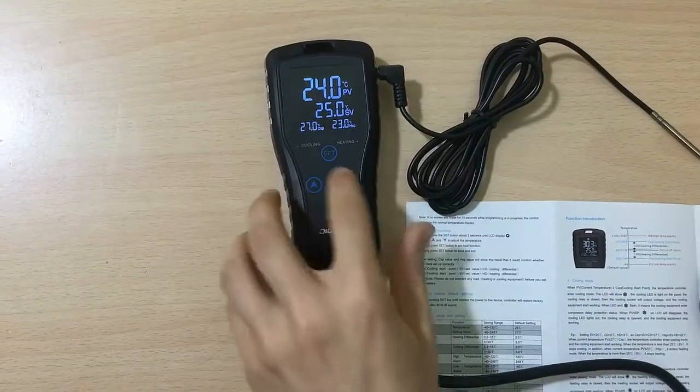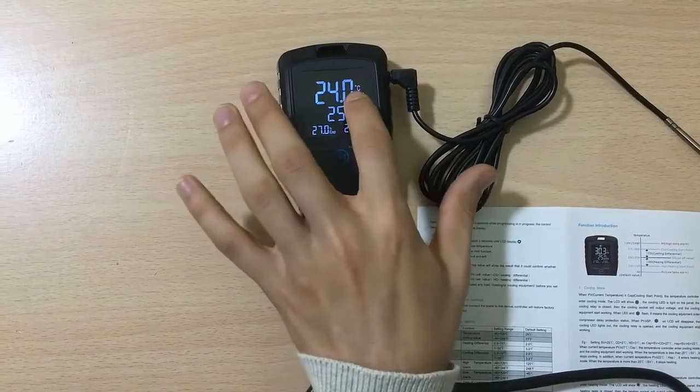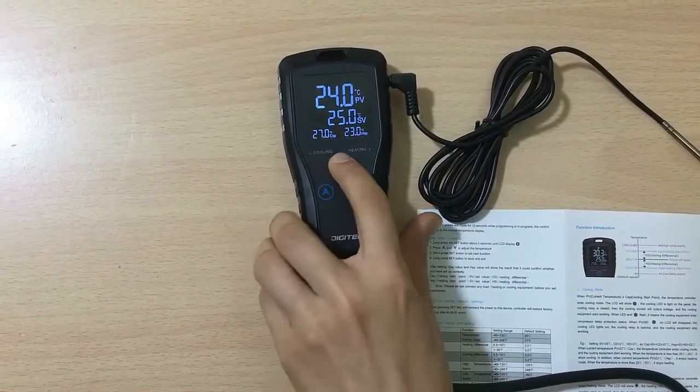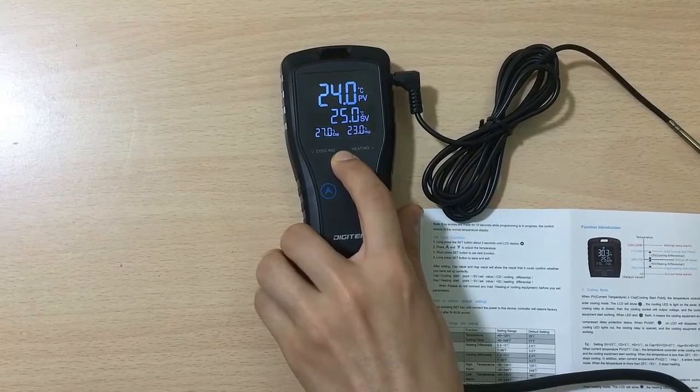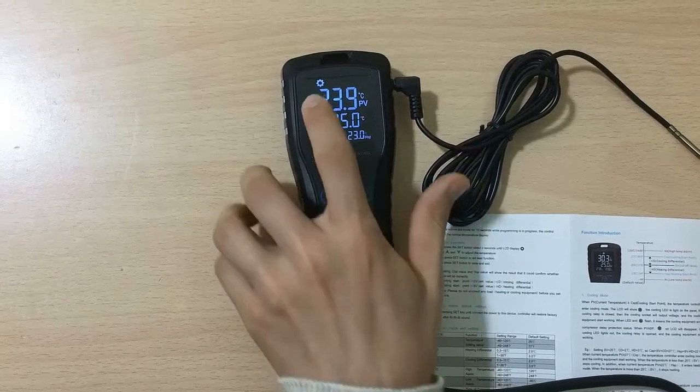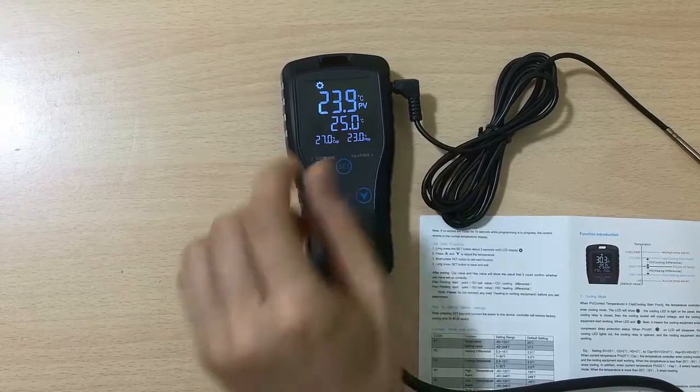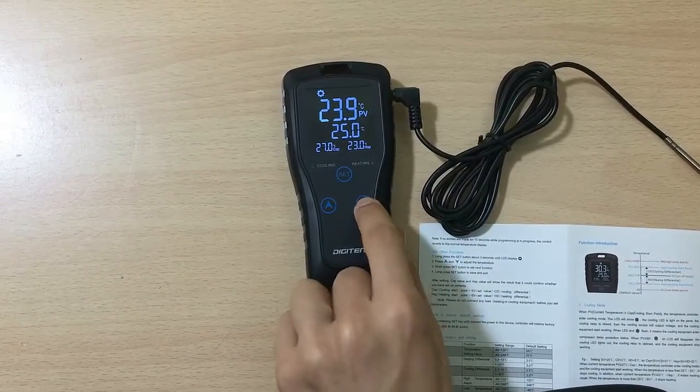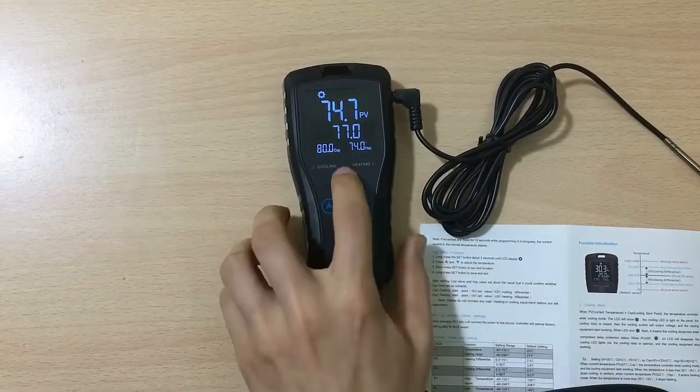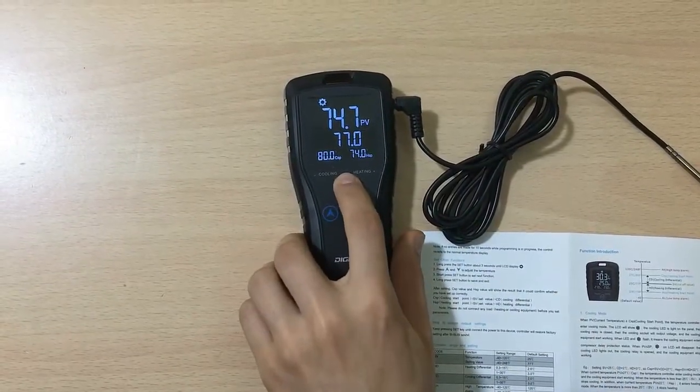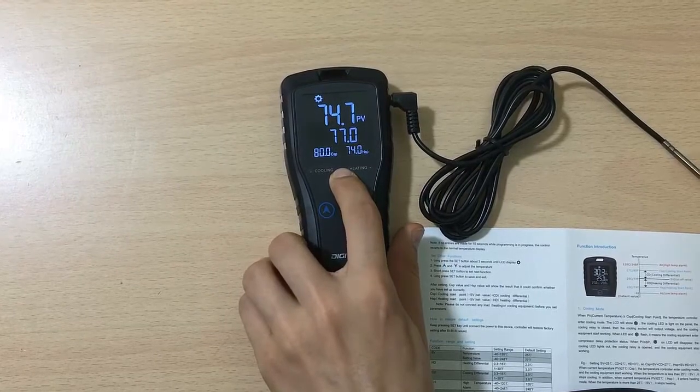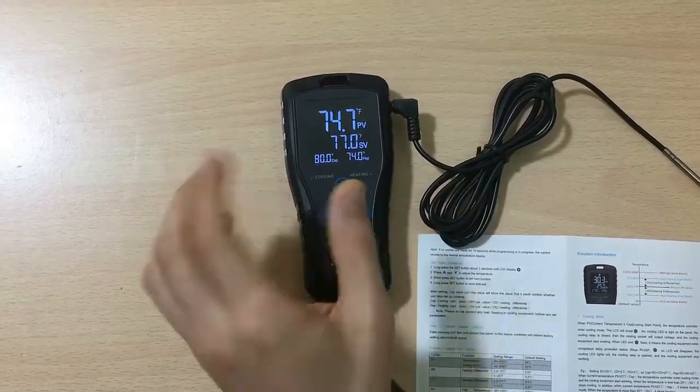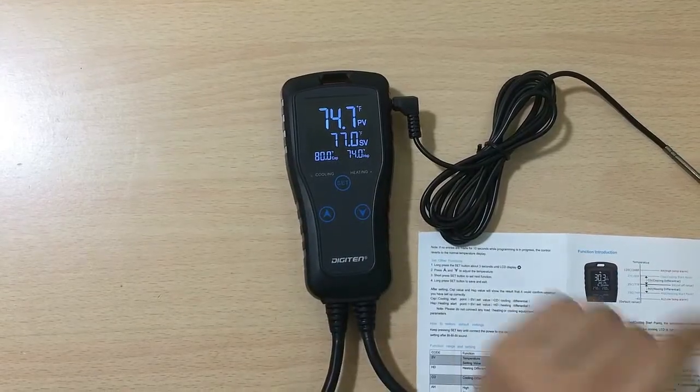As you see, it can show the temperature. But what if you want to see the temperature in Fahrenheit, not Celsius? You should long press the set button. As you can see, the set icon is lightened. Now press the top or bottom button. Any button is okay. And you see, we have Fahrenheit here. Then you have to press the set button one more time for a long time. The set icon is not lightened, and now we have Fahrenheit.